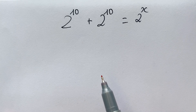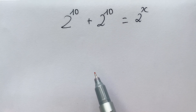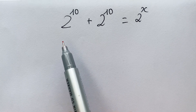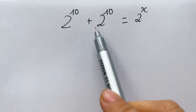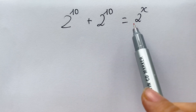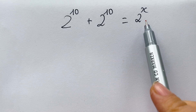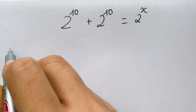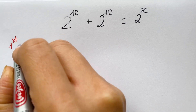Hello everyone, we are going to have three best ways to solve the exponential equation. In this case, the equation is 2 power 10 plus 2 power 10 is equal to 2 power x. Firstly, we have the first way.